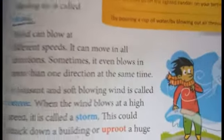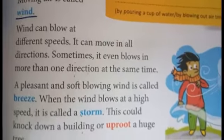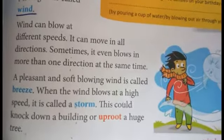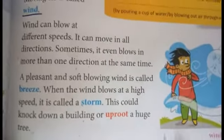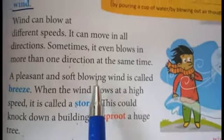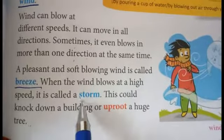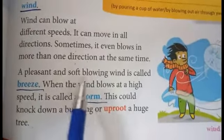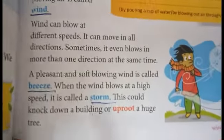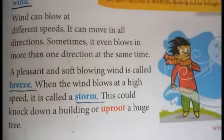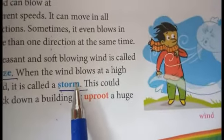Wind can blow at different speeds and move in all directions, sometimes in more than one direction at the same time. A pleasant and soft blowing wind is called breeze. When the wind blows at a high speed, that is called a storm. A storm will damage our daily life.